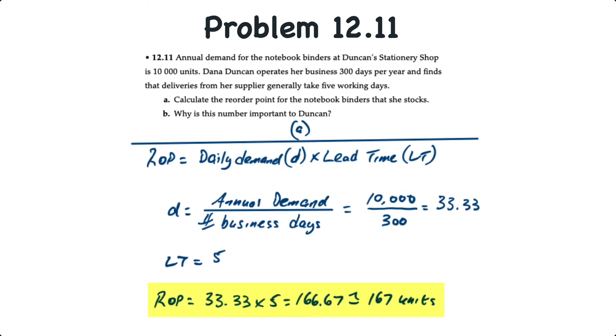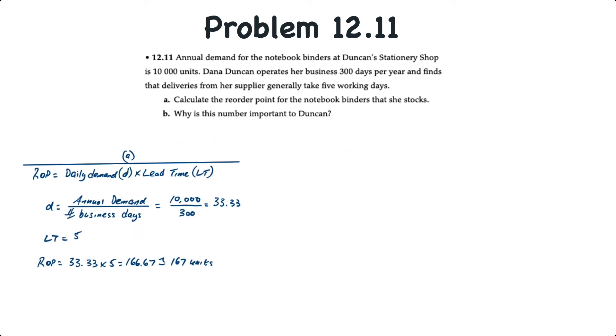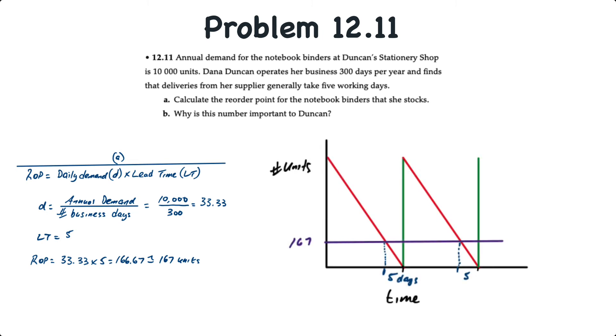So the reorder point is equal to 33.33 times five which equals 166.67 or rounded to 167 units. If we were to see what this looks like visually, although we don't have enough information to determine exactly what the economic order quantity is, it really doesn't matter for illustrative purposes.